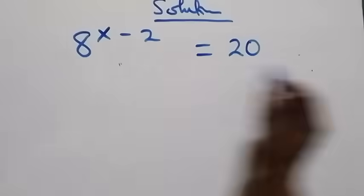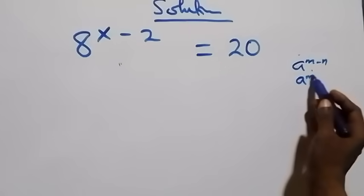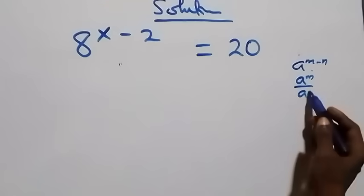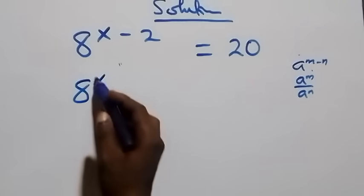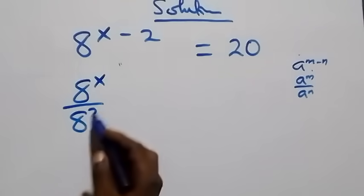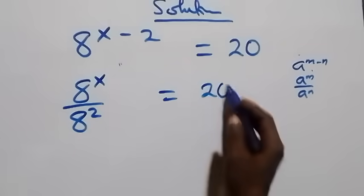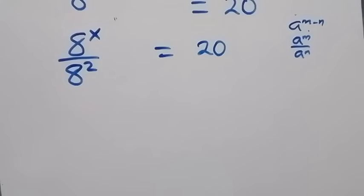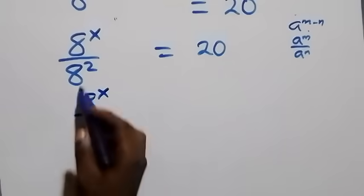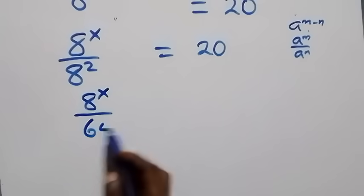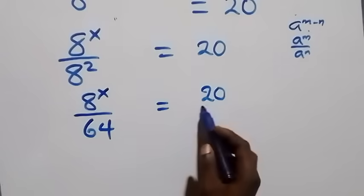This follows from when we have a raised to power n minus n, which is the same thing as a raised to power n over a raised to power n. So here we have 8 raised to power x over 8 squared, which is 64, equals 20.